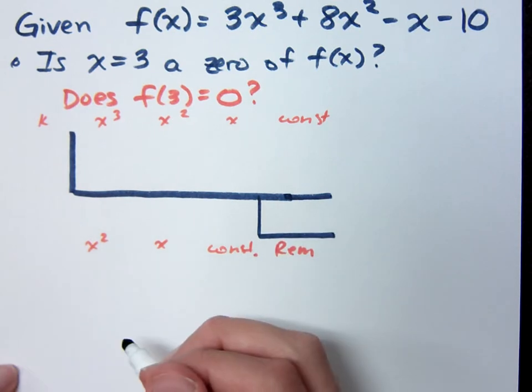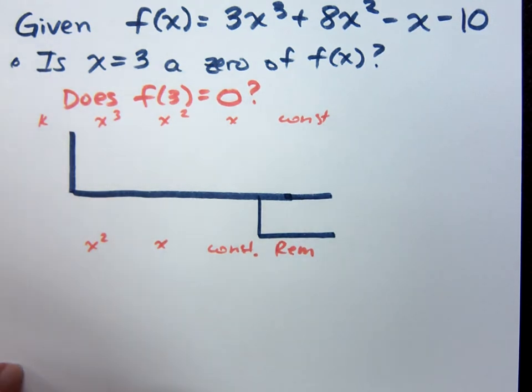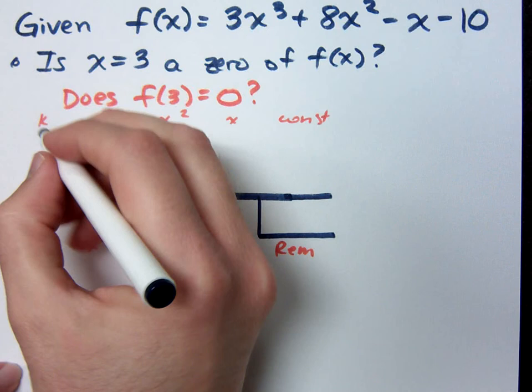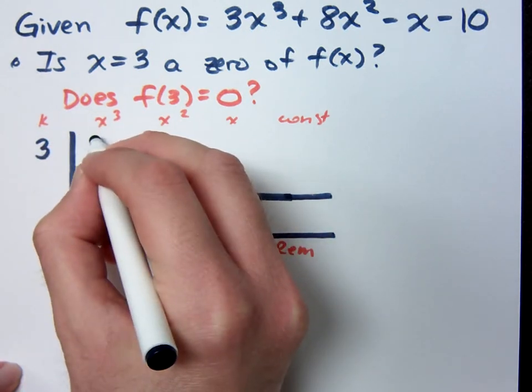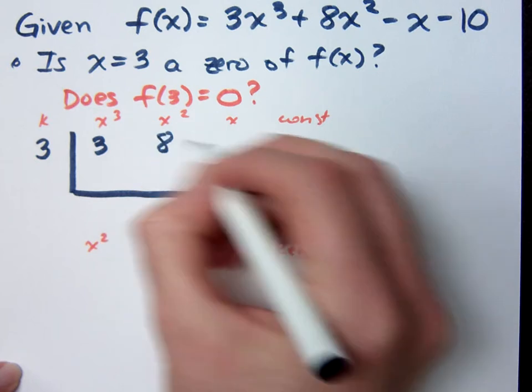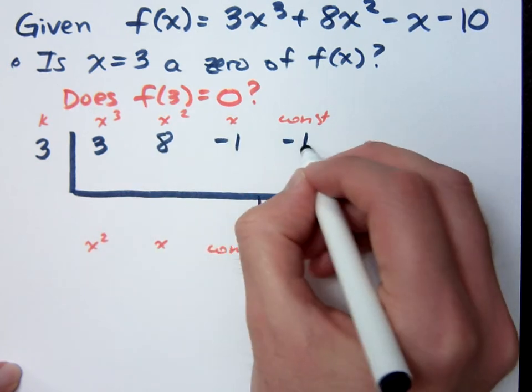So what's your k? What am I using here? I'm using 3. Notice that it's not in that factor form like x plus or minus 3. I'm just telling you, this is what x is. This is your k value. So that's going to be 3. What are your coefficients? 3, 8, -1, and -10.